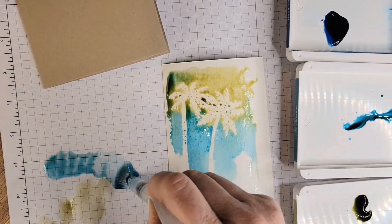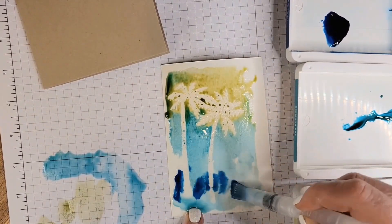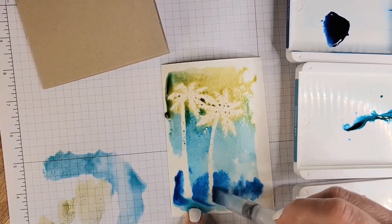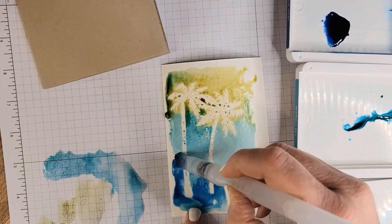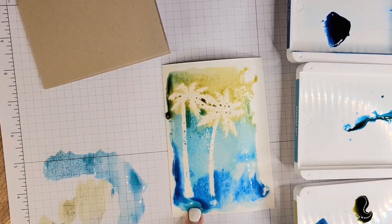And then finally, let's make sure we have enough water down in this area. We're going to do Pacific Point to deepen this color. And then make sure everything is covered.